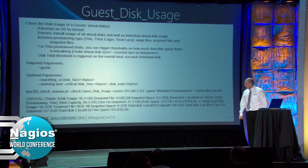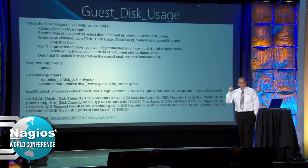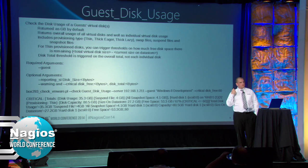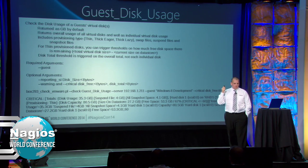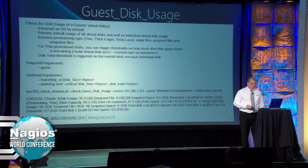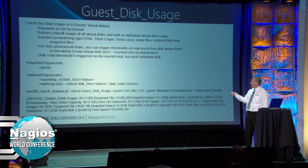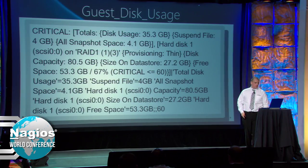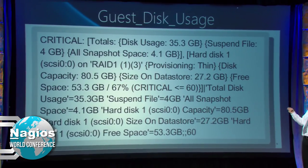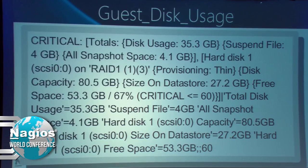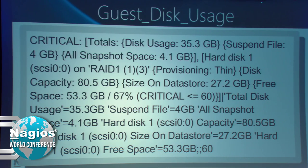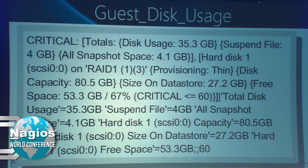Guest disk usage gets into overall usage. If it's a virtual disk, what the virtual disk usage is, if it's got thin or thick provisioning, the snapshots that could be in place and how much disk space they're using, and a total sum. You can alert on how much space is being used. Here's an example where we have a suspend file - this one's actually suspended when I took this check. It's also got snapshots in place taking up space. It's thin provisioned at 80 gigs but only using 27 gigs.